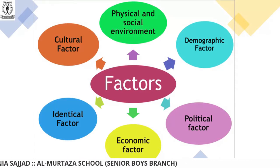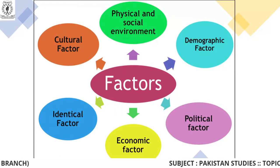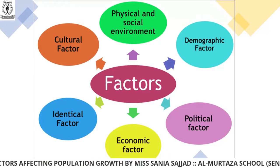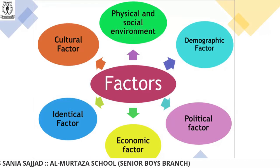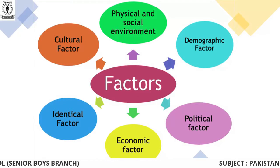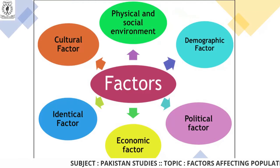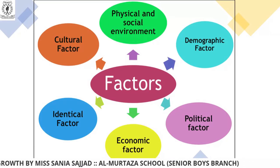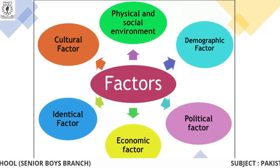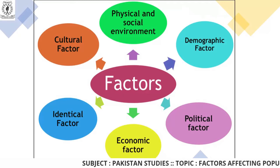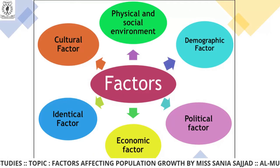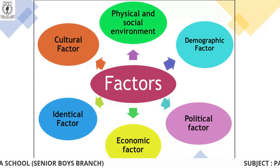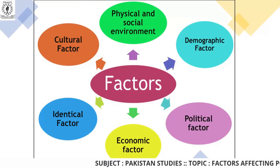Number one: physical and social environment — how many people are living in your surroundings and how you are interacting with them. Number two: demographic factor — the location where you are living and the situation in your surroundings. Then comes political factor — how you are responding to government actions. Economic factor — do you have enough income to feed your family and how do you divide your budget. Individual factors and cultural factors — those customs and traditions which you follow from your ancestors.